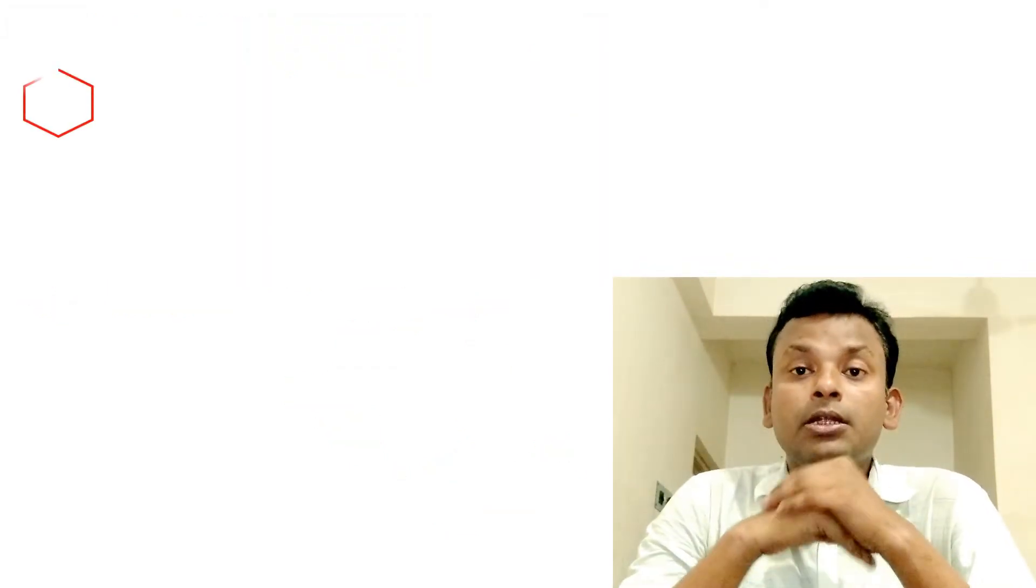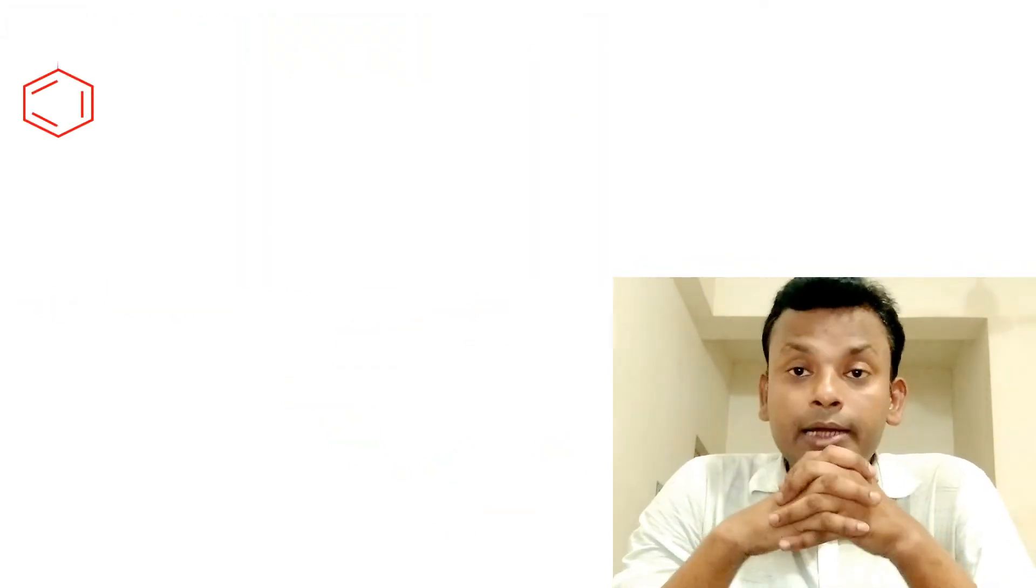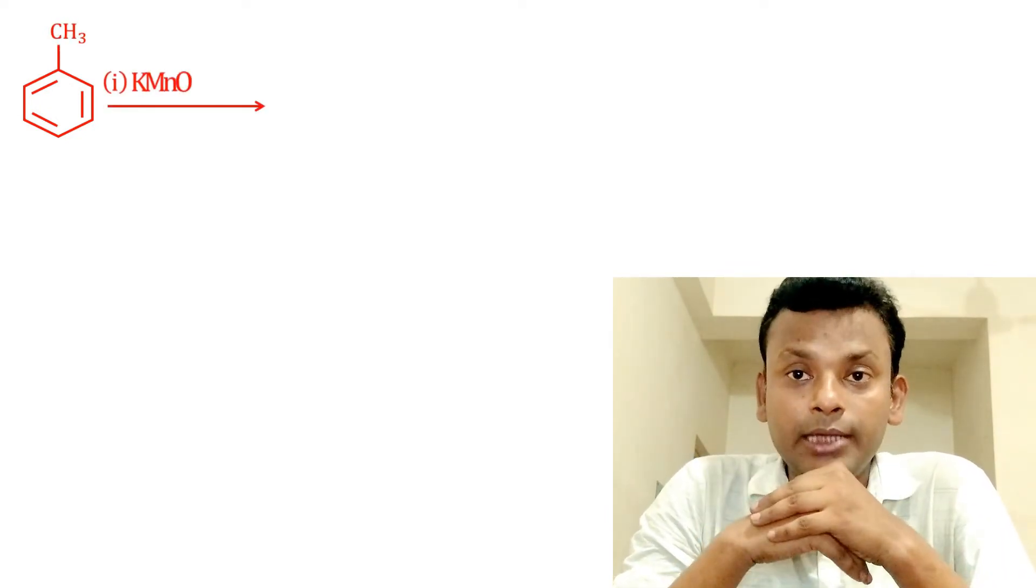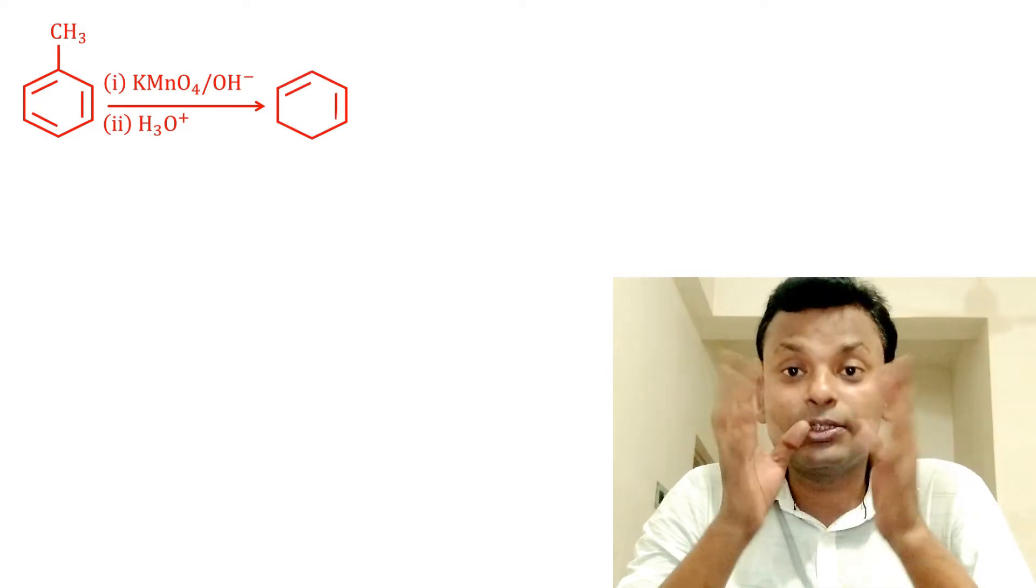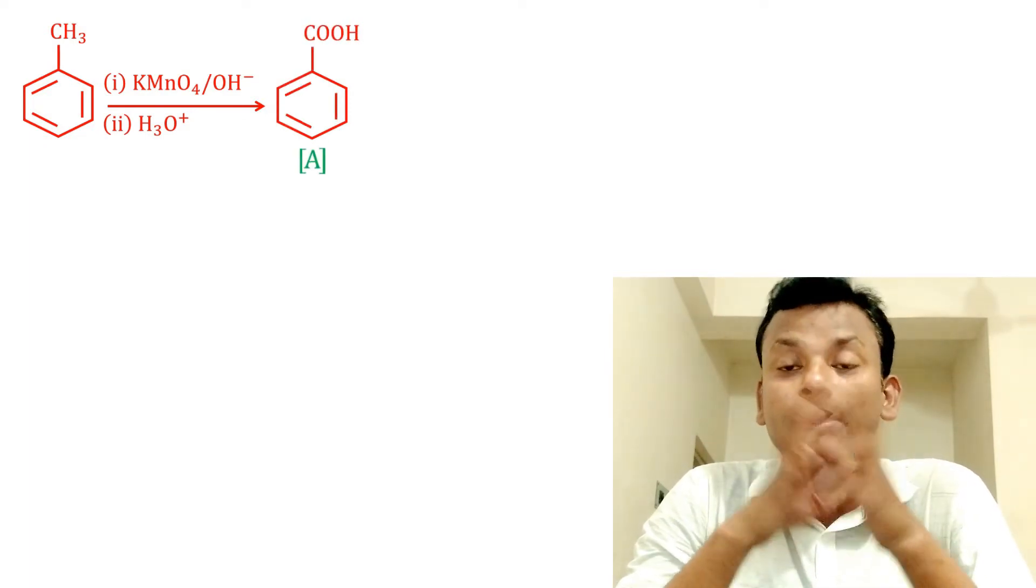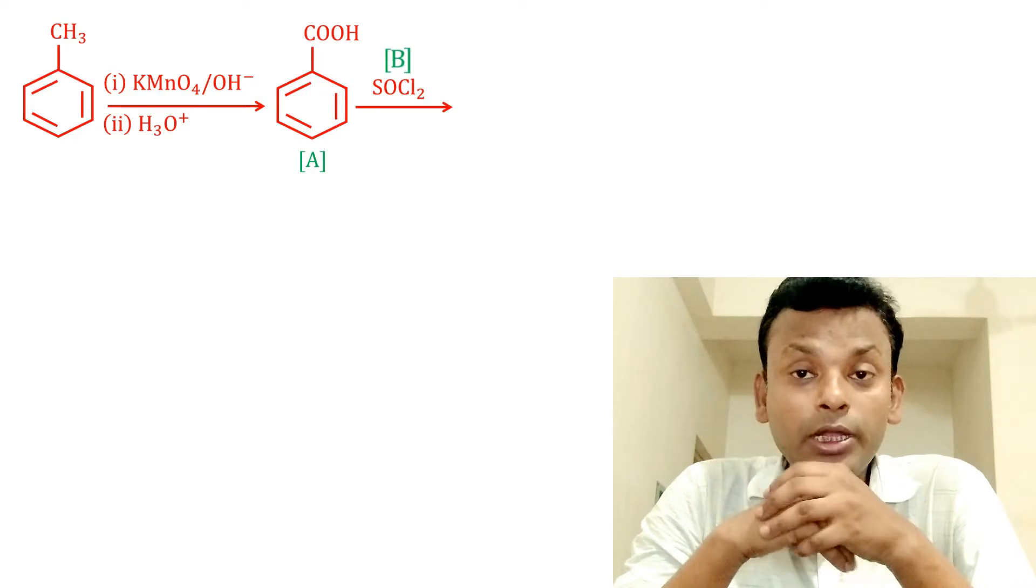Answer: First, toluene reacts with alkaline KMnO4 and hydrolysis gives A, that is benzoic acid. And B, that is SOCl2 thionyl chloride, gives benzoyl chloride.